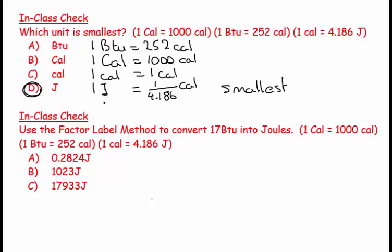The second part says use the factor-label method to convert 17 BTU into Joules. So we have 17 BTU and you play this game where you say, but I don't want BTU, I want Joules. You look at your conversions—I have a BTU into calories, that's part of the way there, and I have a little calorie into Joules, so it's not so bad.